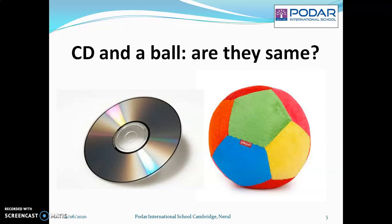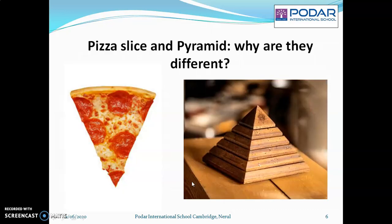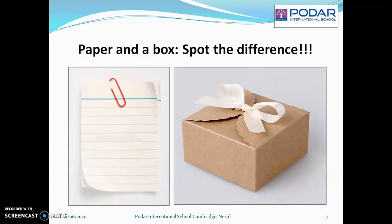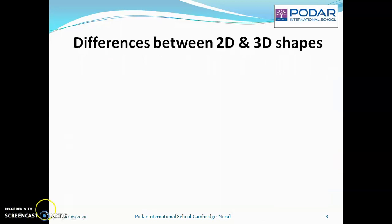Here we have two pictures. One is a CD and the other is a ball. Are they same? One more — a pizza slice and a pyramid. Why are they different? A paper and a box. Can you spot the difference? Let's try to find the answers by understanding the differences between a 2D and a 3D shape.